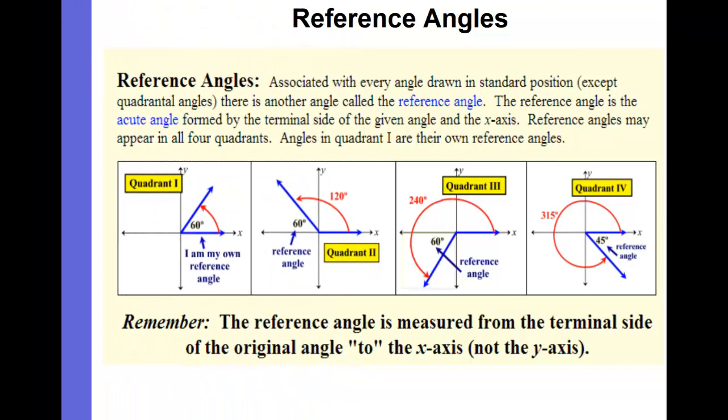Now if we want to go beyond quadrant 1, we're going to need to use what are called reference angles. When an angle is drawn in standard position, it creates another angle called a reference angle. And a reference angle is the acute angle, acute being less than 90 degrees, formed by the terminal side of the angle and the x-axis.